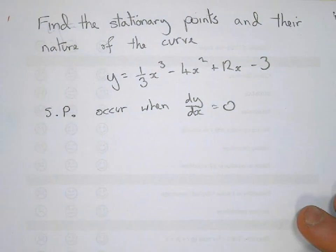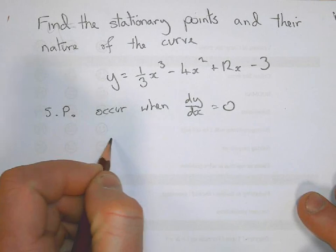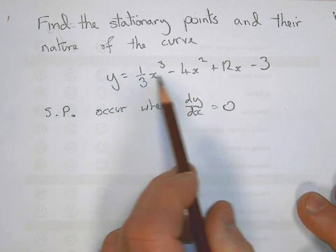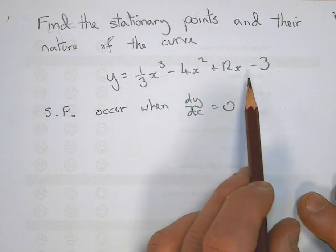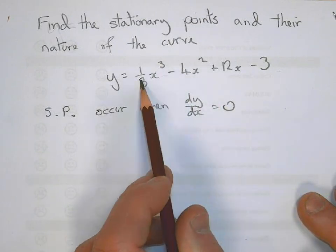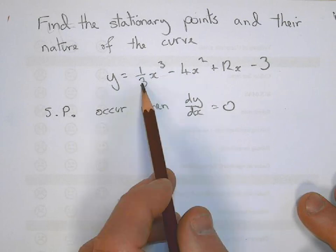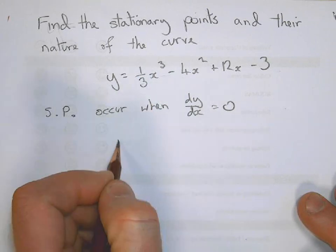Then we're going to differentiate it. This is already ready for differentiation, so you don't need to do any fiddling with it at all. We multiply by the power, so a third times three is one. We take away one from the power and we end up with x squared.